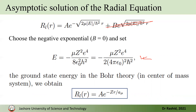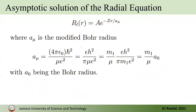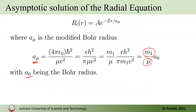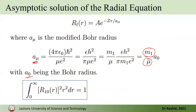Setting E equal to the ground state energy from Bohr theory, we have the solution R_l = A·e^(−Zr/a_μ), where a_μ is the modified Bohr radius. Here a_μ is related to the standard Bohr radius a₀ by the ratio of the electron mass m to the reduced mass μ. Because we are solving for a fictitious particle of mass μ rather than the electron of mass m, this modification is necessary.